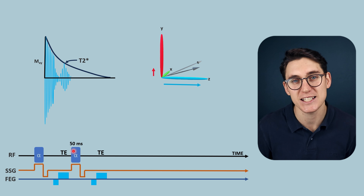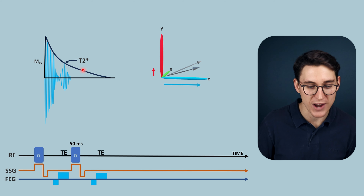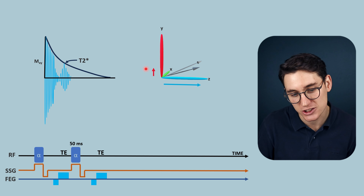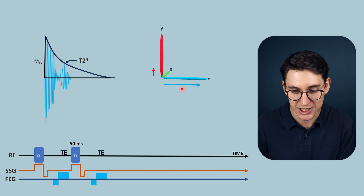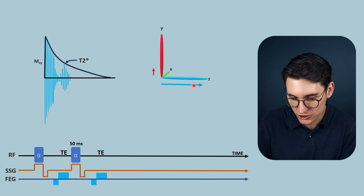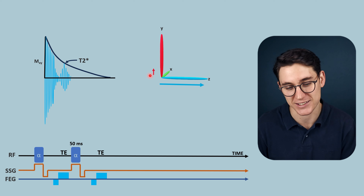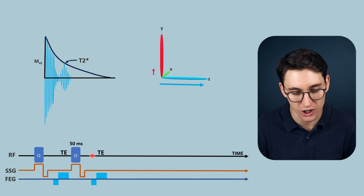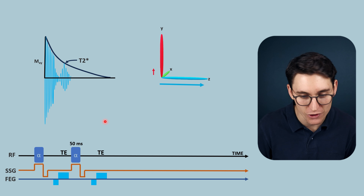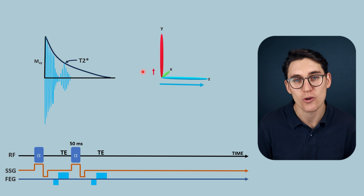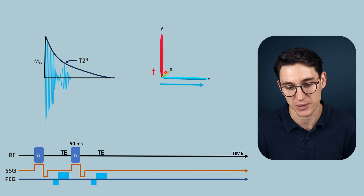Notice how short the TR is in this pulse sequence - the TR occurs so rapidly that we haven't yet lost transverse magnetization. During this period of time, we gain some longitudinal magnetization and lose some transverse magnetization, but it's not completely gone at the next RF pulse. The TR is short enough that we have what's called residual transverse magnetization - there is still some phase coherence in the XY plane.